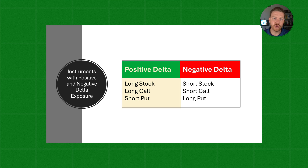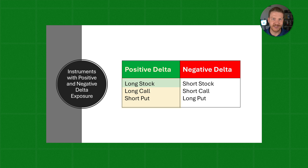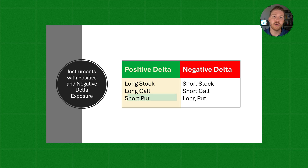A few instruments in this category could be longing a stock — so that would be owning a stock. If I own a stock and its price goes up, I've made money. Longing a call: if I bought a call option on this stock and its price goes up, I profit. Or shorting a put: if I sell a put and the price goes up, that's good for me because I sold away the put.